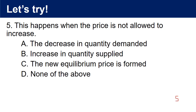Question 5: This happens when the price is not allowed to increase. The choices are: a. The decrease in quantity demanded, b. Increase in quantity supplied, c. The new equilibrium price is formed, d. None of the above. The answer is c. The new equilibrium price is formed.